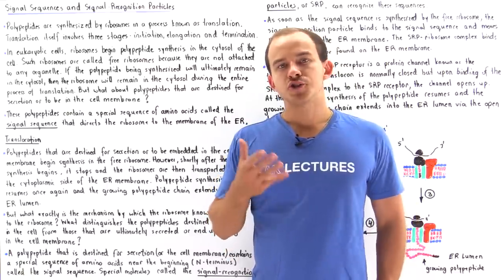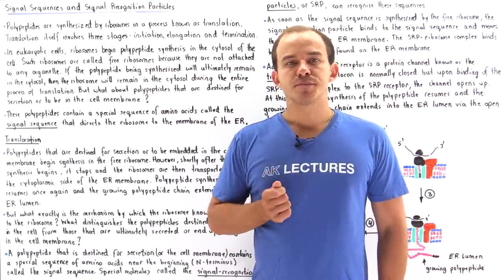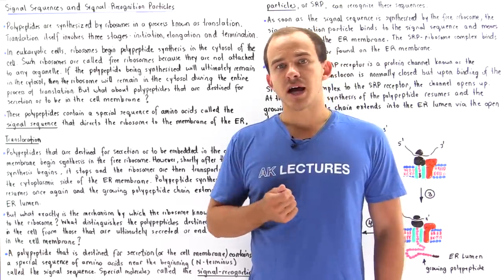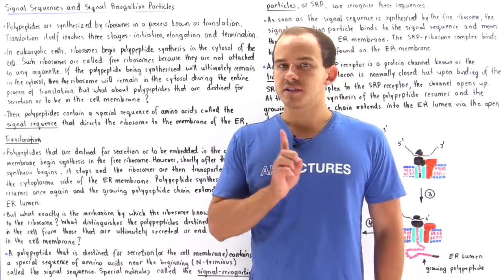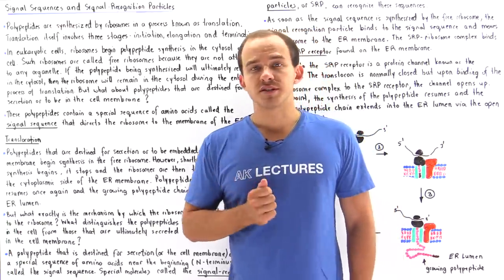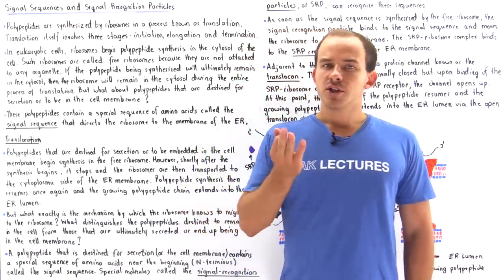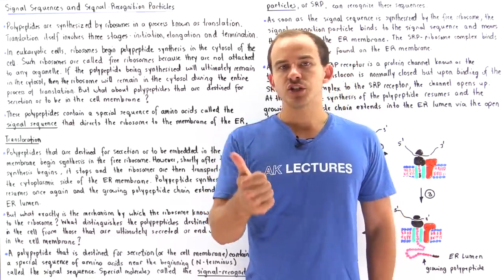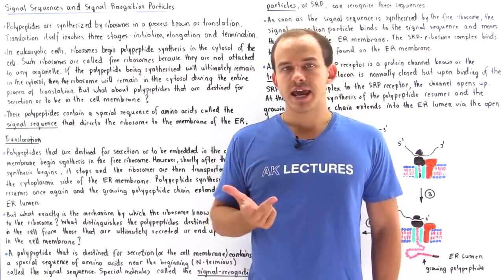Ribosomes are the machinery of the cell responsible for synthesizing polypeptides via a process known as translation. Translation involves three important stages: initiation, elongation, and termination.